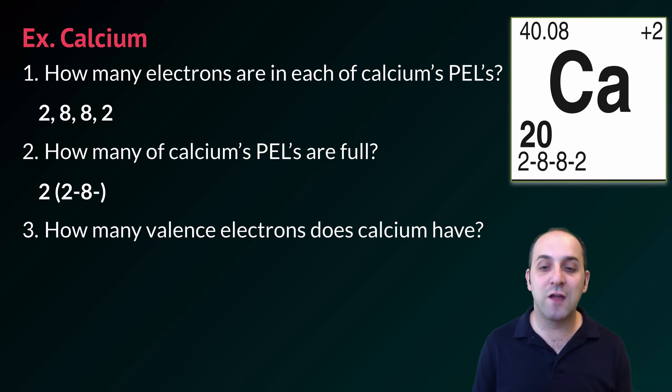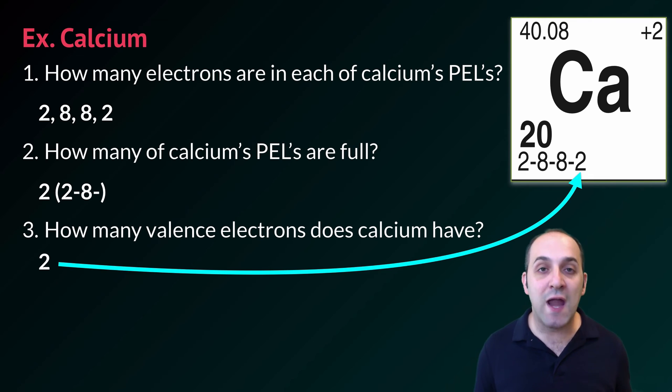And finally how many valence electrons does calcium have? Calcium has 2 valence electrons. This is always going to be the right most number in any basic electron configuration. For calcium this number happens to be 2.